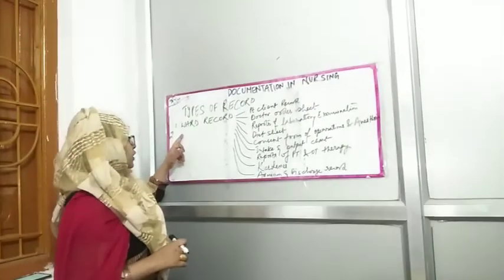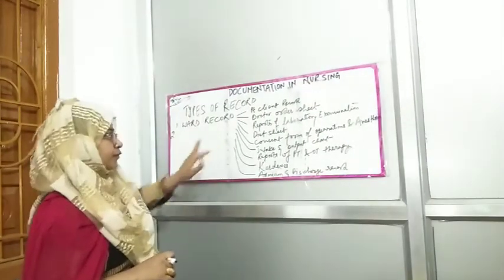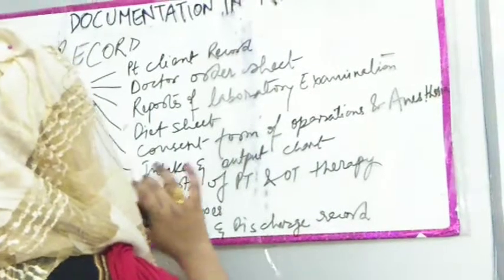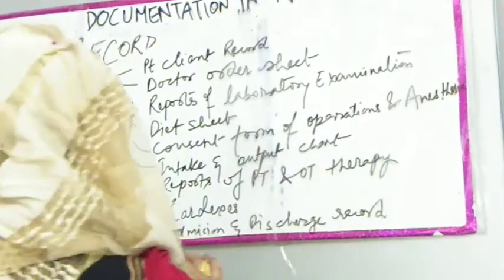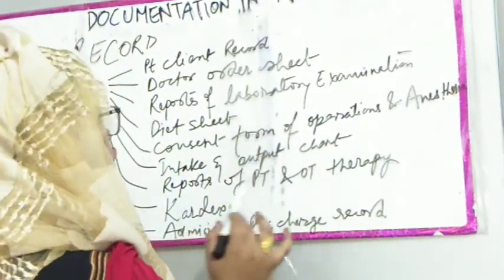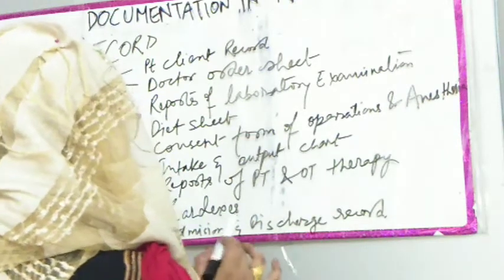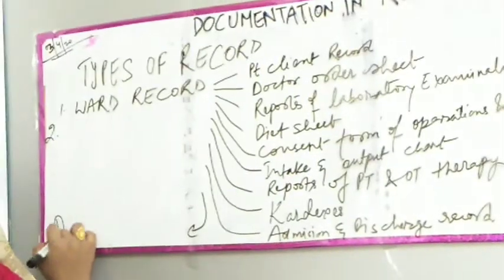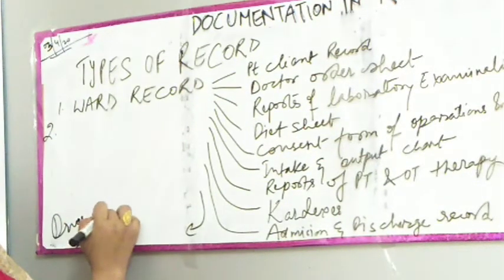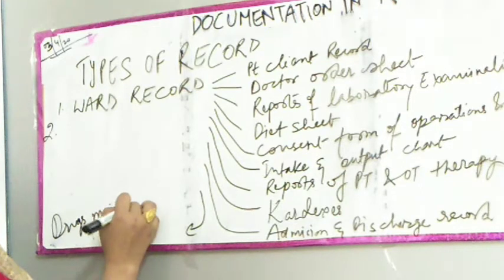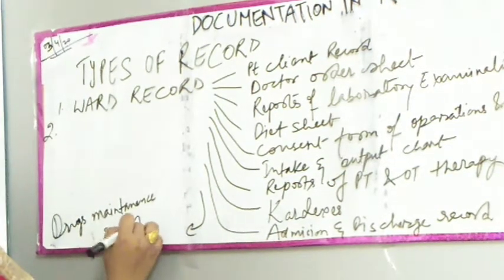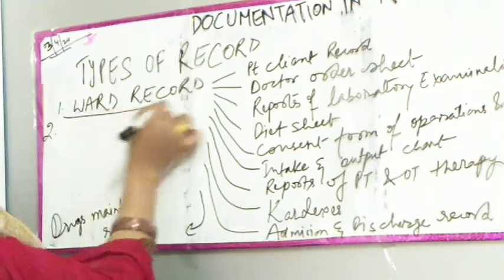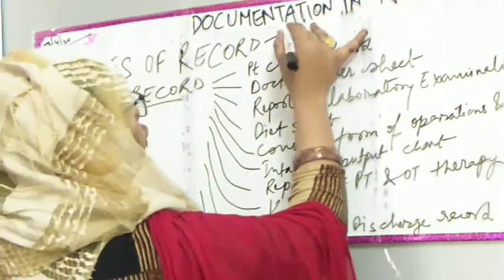First, let us describe ward records. Ward records include: patient client record, doctor order sheet, reports of laboratory examination, diet sheet, consent form of patients, intake and output chart, reports of PT and OT therapy, cardiac records, admission and discharge records, and drug administrative records.